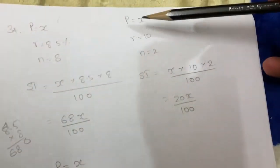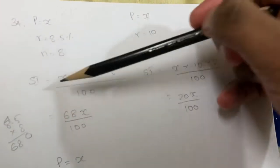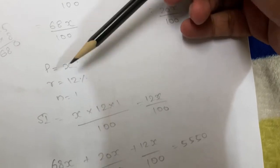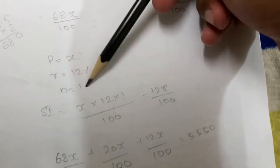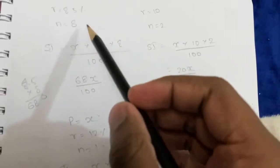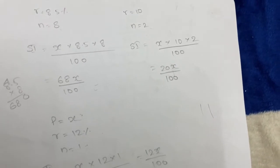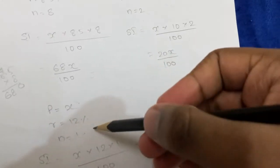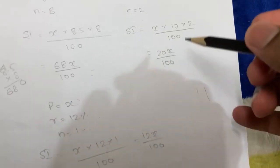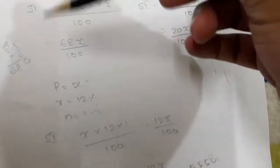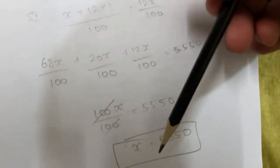Let the principal be X. For the first period: 8 years at 8.5%, for the next period: 2 years at 10%, and beyond 10 years: 12% for 1 year. Adding all three interest components, the total interest equals 5550. The 100s cancel and we solve for the principal.